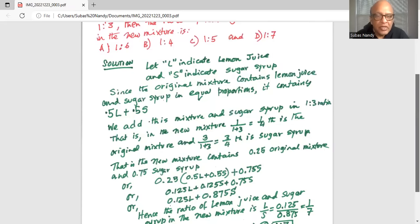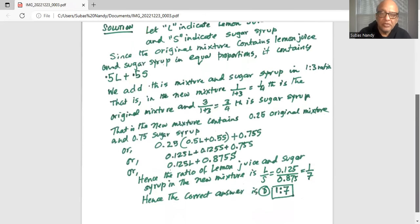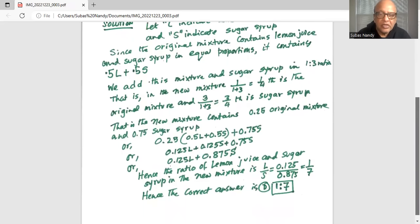In the new mixture, which is 0.125L plus 0.125 plus 0.75 is 0.875 sugar. Hence the ratio of lemon juice and sugar in the new mixture is lemon to S.